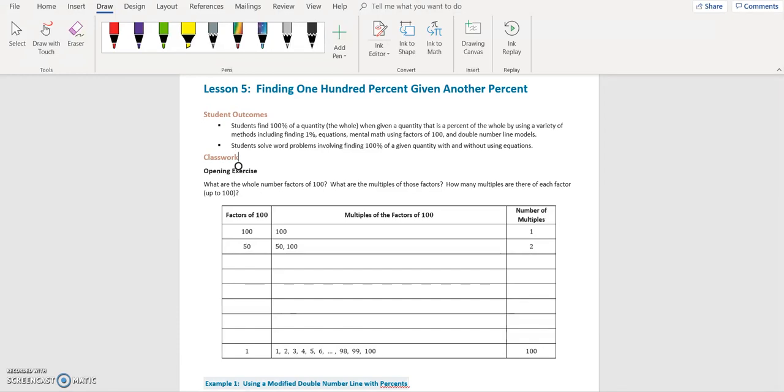In our opening exercise, what are the whole number factors of 100? What are the multiples of those factors, and how many multiples are there of each factor? So we have this table set up. Factors meaning what can we multiply together to get 100. We have 1 times 100 gives me 100, 50 times 2 gives me 100, 4 times 25 will give me 100, 5 times 20 will give me 100, and 10 times 10 will give me 100.